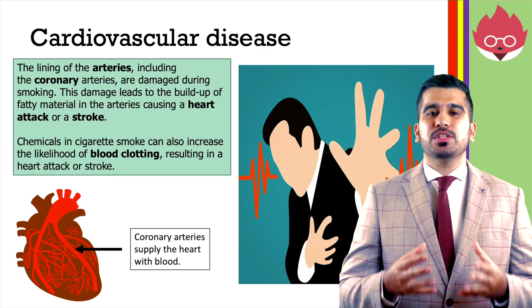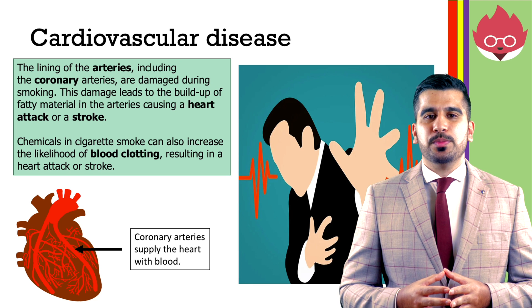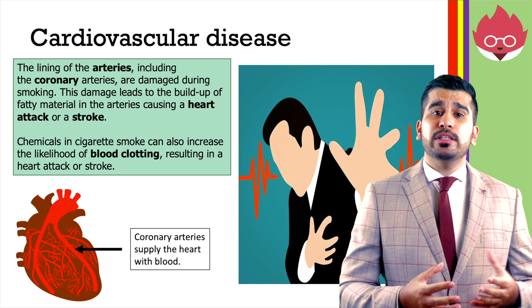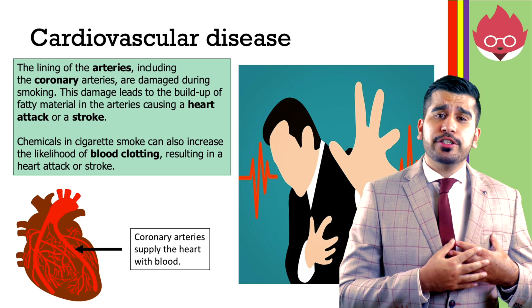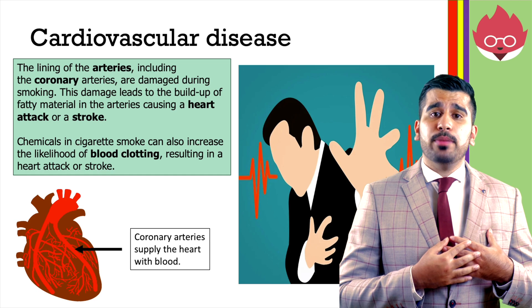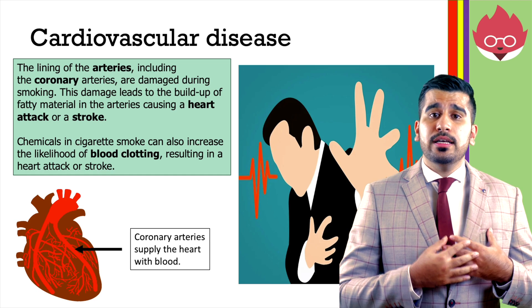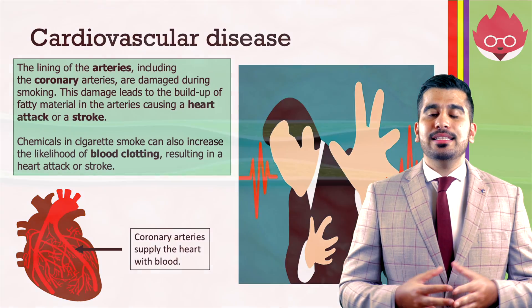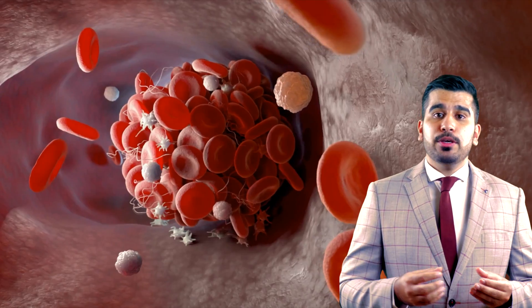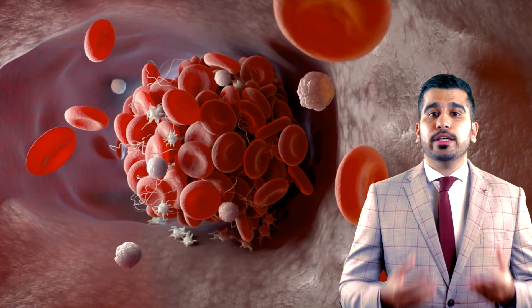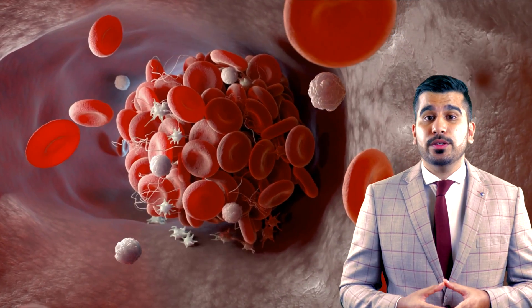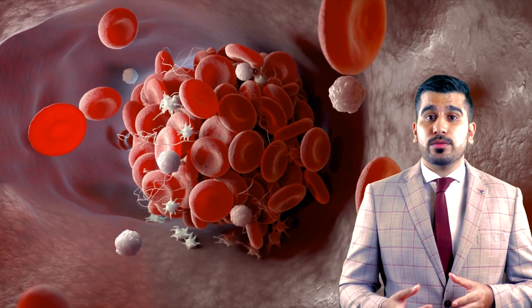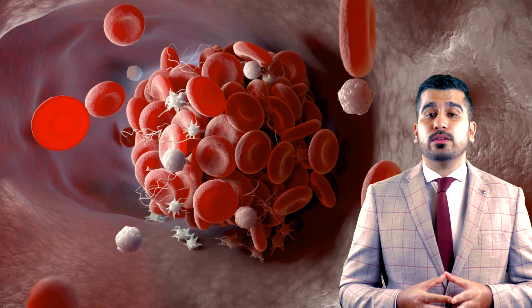Cardiovascular disease is another consequence of people who smoke. The lining of the arteries, including the coronary arteries, which are the arteries that supply blood to your heart, can be damaged during smoking. This damage is caused by a buildup of fatty material in the arteries, which can cause a heart attack or a stroke. Chemicals in cigarette smoke can also increase the likelihood of blood clotting, which can also result in heart attack or stroke.